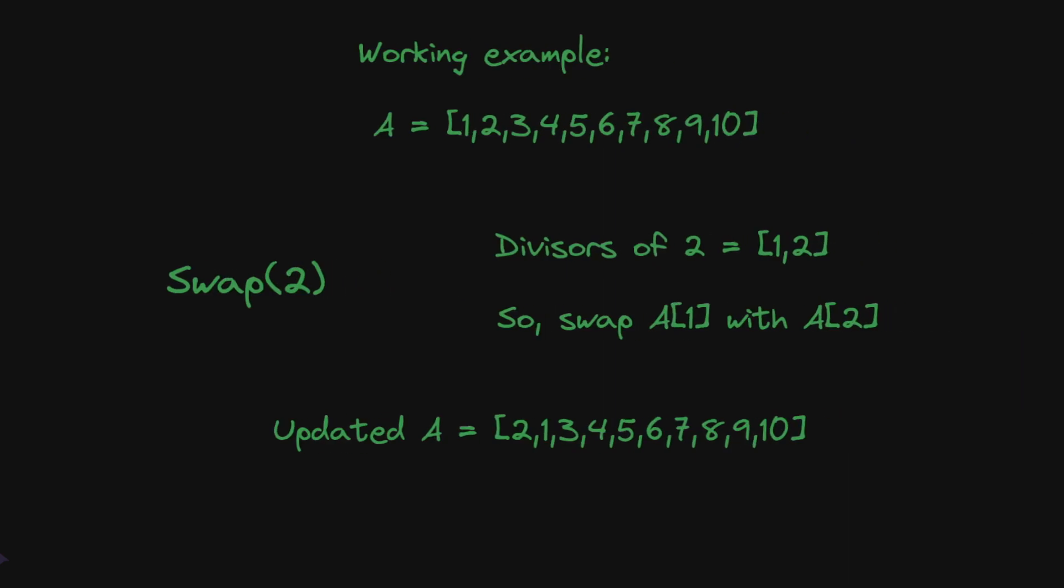Now let's look at a working example for n equal to 10. The original array is 1, 2, 3, 4, 5, 6, 7, 8, 9, 10. When we call swap 2 operation, the divisors of 2 are 1 and 2, and the largest proper divisor would be 1. So we swap a1 with a2. The updated array becomes 2, 1, 3, 4, 5, 6, 7, 8, 9, 10. If you notice, initially 1 was at index 1, now 1 is at index 2.